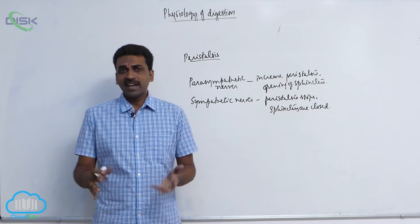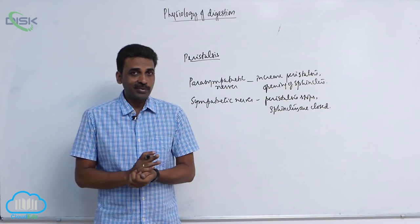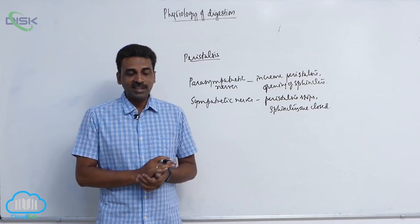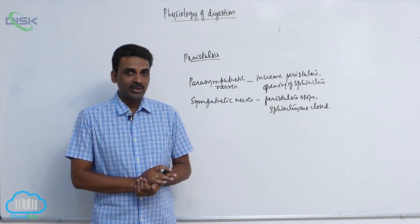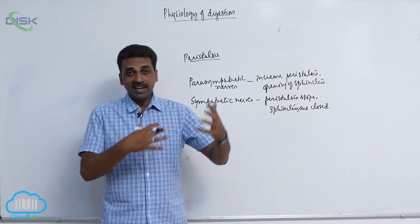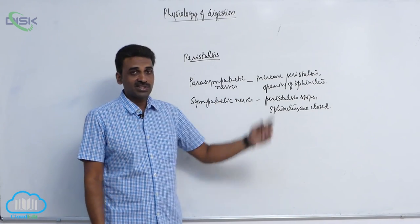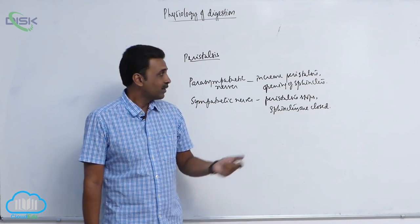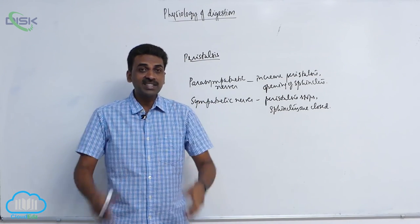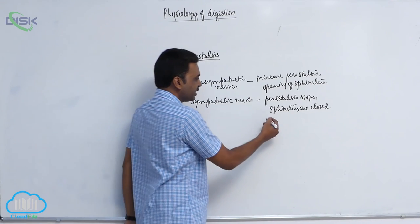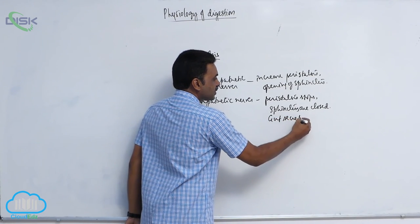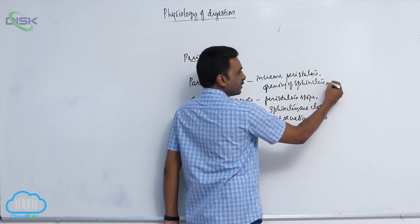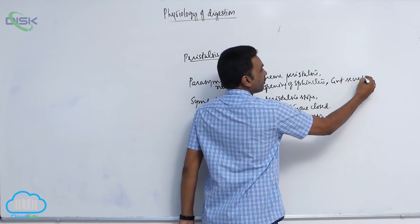The emergency activity is not permanent — it lasts for a certain period of time. After that, the person comes back to normalcy in a rest-and-digest process. Parasympathetic nerves are stimulated: sphincters open, food moves forward into the next areas, peristalsis increases, and gut secretions increase.